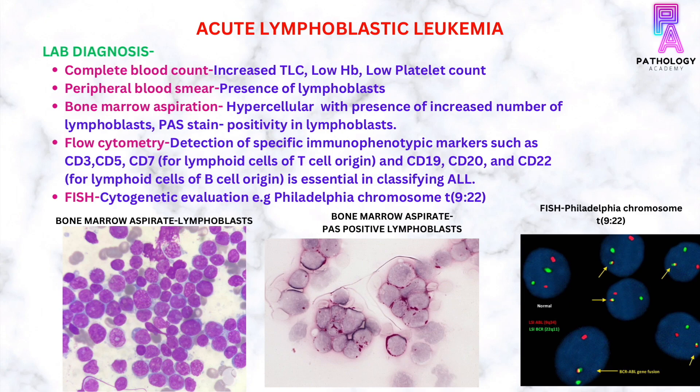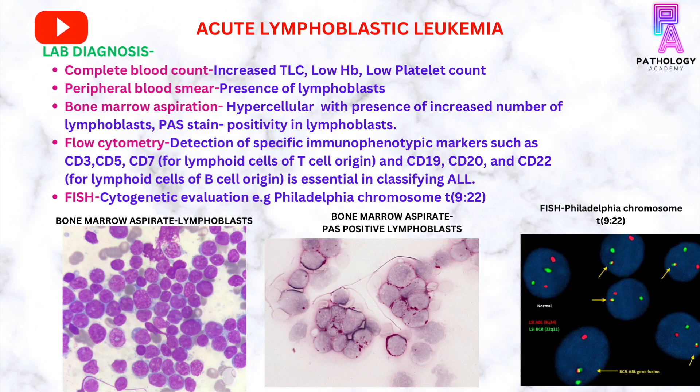Coming to the diagnostic workup of ALL: for lab diagnosis, complete blood counts are done, which show increased total leukocyte count, low hemoglobin, and low platelet counts. The peripheral blood smear may show presence of lymphoblasts. The bone marrow aspirate is hypercellular and shows an increased number of lymphoblasts, which are positive on staining with periodic acid-Schiff stain.